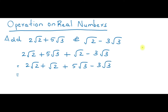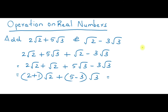So I will be getting 2 root 2 plus 1 root 2, which I can write as (2 plus 1) into root 2 plus (5 minus 3) into root 3. So 2 plus 1 into root 2 gives 3 root 2, and 5 minus 3 into root 3 gives 2 root 3. So my problem is solved: the answer is 3 root 2 plus 2 root 3.